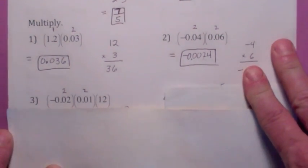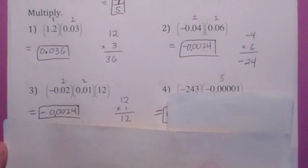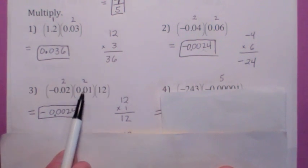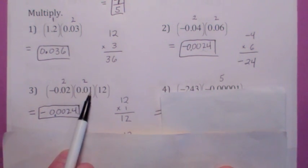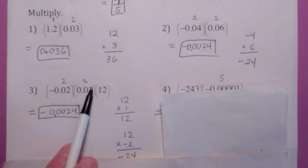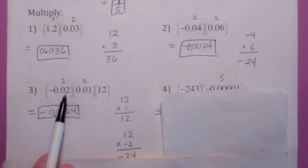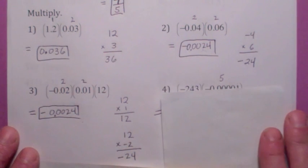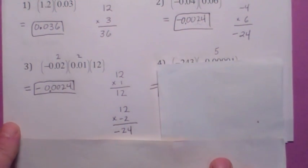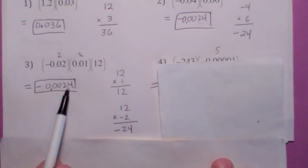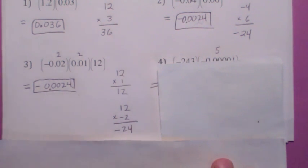This one you could do in stages. You could think of this as 12 times 1, which means you move the decimal over 2 to the right, giving you 12. Then multiply by negative 2, which means you move this over 2 to the right also — so you move it a total of 4 places to the right. So you've got to move it back 4 places to the left. 1, 2, 3, 4 — that's your answer.